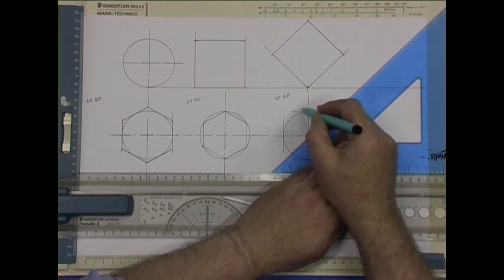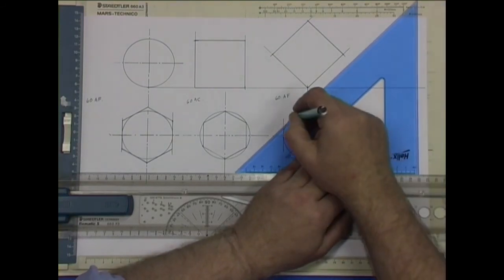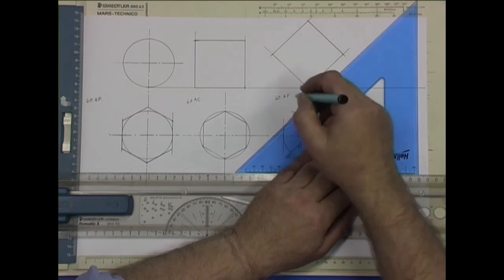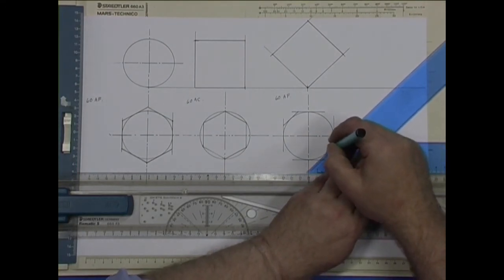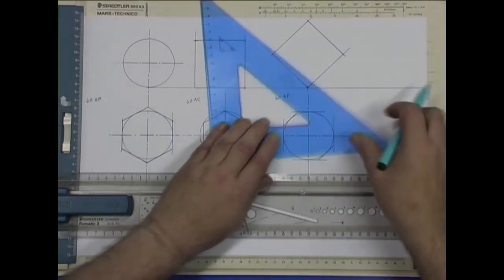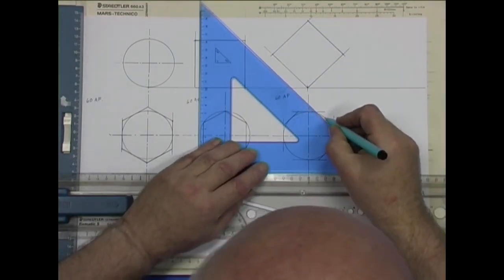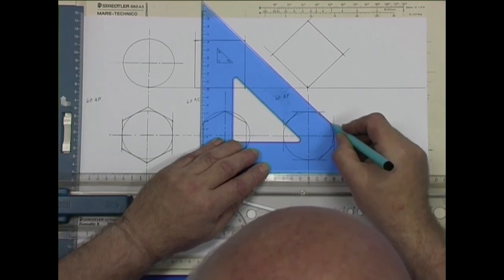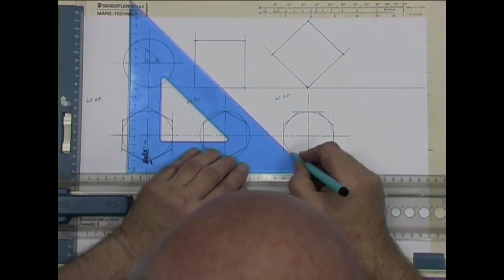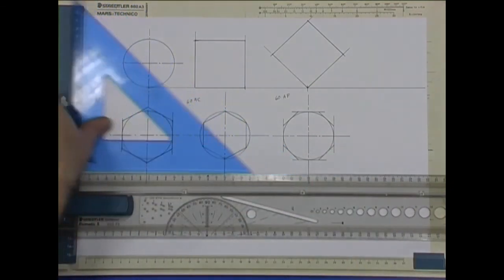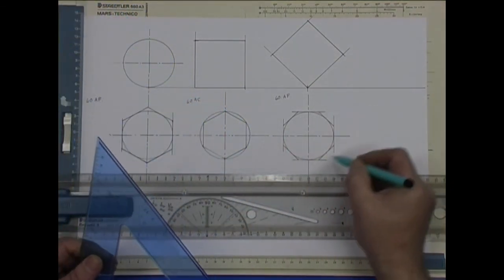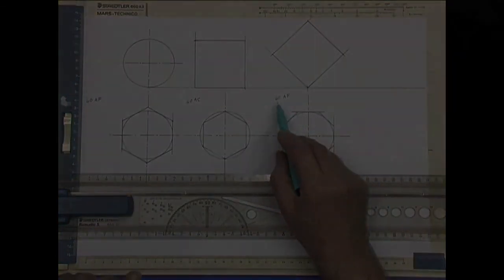And to finish off, we need to draw a tangent point at 45 degrees, just touching that surface there, just touching that surface there, and that surface, and that surface. And there we have a regular octagon.